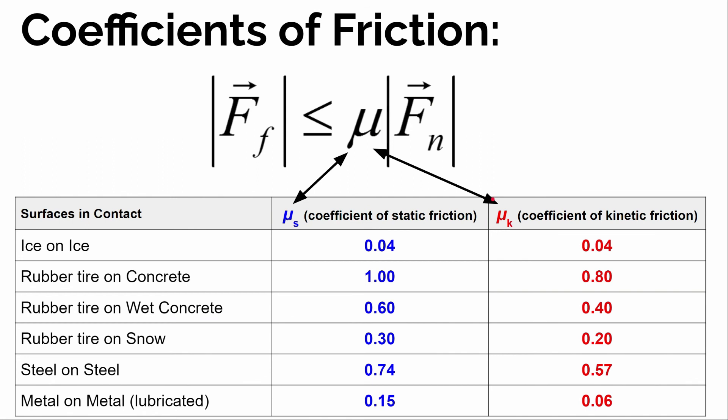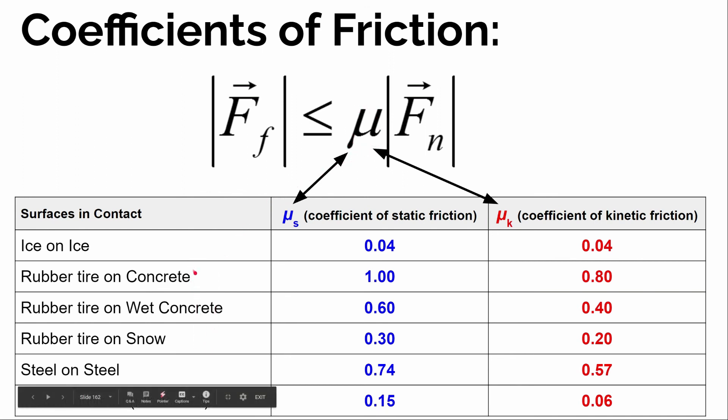After watching this video, you should now be able to calculate the size of static friction or kinetic friction for lots of situations. There are only two things you need to know: number one, how big is the coefficient based on the materials in contact, and number two, how big is the normal force between the two surfaces.